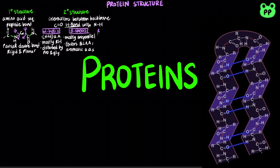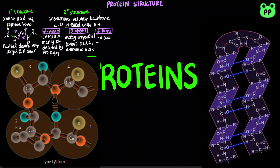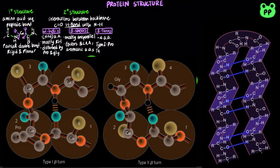Beta turns are four amino acids that connect the ends of two adjacent segments of an anti-parallel beta sheet, with the carbonyl oxygen of the first residue forming a hydrogen bond with the amino hydrogen of the fourth. Type 1 beta turns usually have proline as the second residue, whereas type 2 beta turns usually have glycine as the third residue.